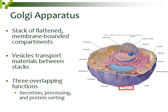As vesicles transport proteins through the Golgi apparatus, the Golgi apparatus has three main functions: it can secrete the protein, sending it off to where it's supposed to go; it can process the protein by cutting it up; it can do additional glycosylation, adding carbohydrates to the protein; and it also sorts the proteins as they move through.